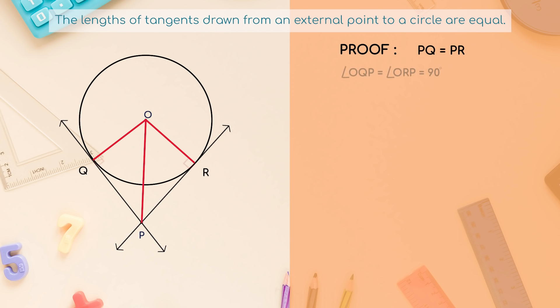Then angle OQP and angle ORP are right angles, because these are angles between the radii and tangents, and according to theorem 1 they are right angles. Now in right triangles OQP and ORP, OQ equals OR (radii of the same circle), OP equals OP (common). Therefore, triangle OQP is congruent to triangle ORP (RHS congruency). This gives PQ equals PR (CPCT).